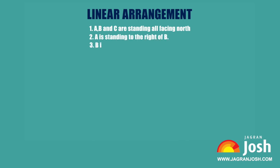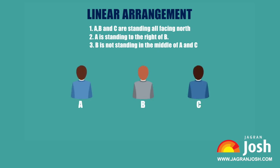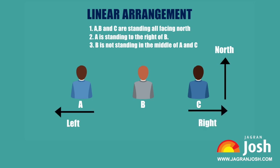B is not standing in the middle of A and C. If we see the statements given above, all the people are facing north. The left and right is taken according to the direction in which the persons given in the question are facing. If nothing is given, we can take all people as facing north.